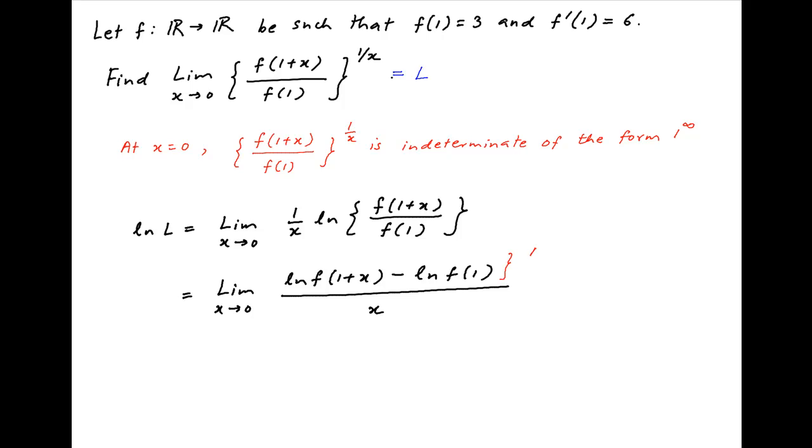Now when x equals 0, the numerator equals ln f(1) minus ln f(1) which equals 0, and the denominator equals 0 as well. Therefore, this is indeterminate of the form 0/0.